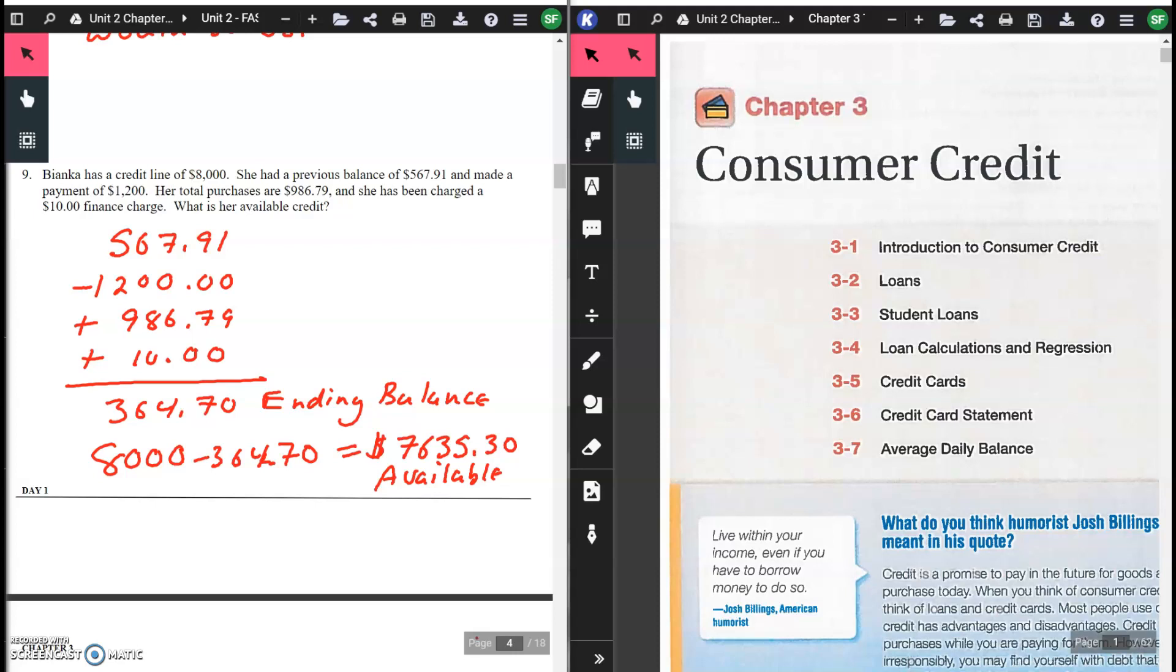Let me review that again. On her credit card, she owed $567.91. She made a payment. If you want to think of it a little bit differently, we can do that as well. She owed $567, that's a negative. She owes that to her credit card. She made a payment, so we're going to add that on. Her total purchases were $986.79, we're going to subtract that off. And her finance charge is $10, we're going to subtract that off. The only thing that she paid into her credit card was the $1,200. Everything else came off. You notice you're going to get the same ending balance of $364.70, which gives you your same available credit of $7,635.30.